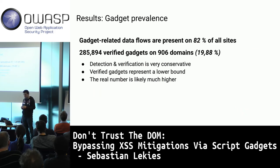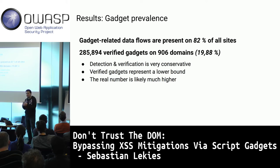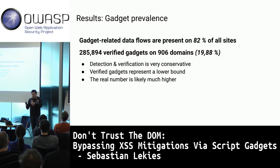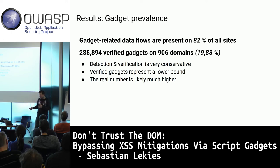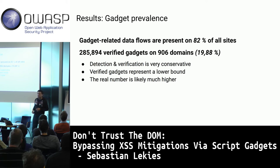Running this on the Alexa top 5,000, we found gadget-related data flows in 82% of all websites. The other 18% were likely offline or static pages with no JavaScript. Running those flows through our exploit generator, we verified about 285,000 gadgets across the top 5,000. We confirmed gadgets in about 20% — 906 domains — but our approach was very conservative with a zero false-positive rate. Manually reviewing flows, most were exploitable, so the real number is likely between 20% and 82%, probably closer to 80%.